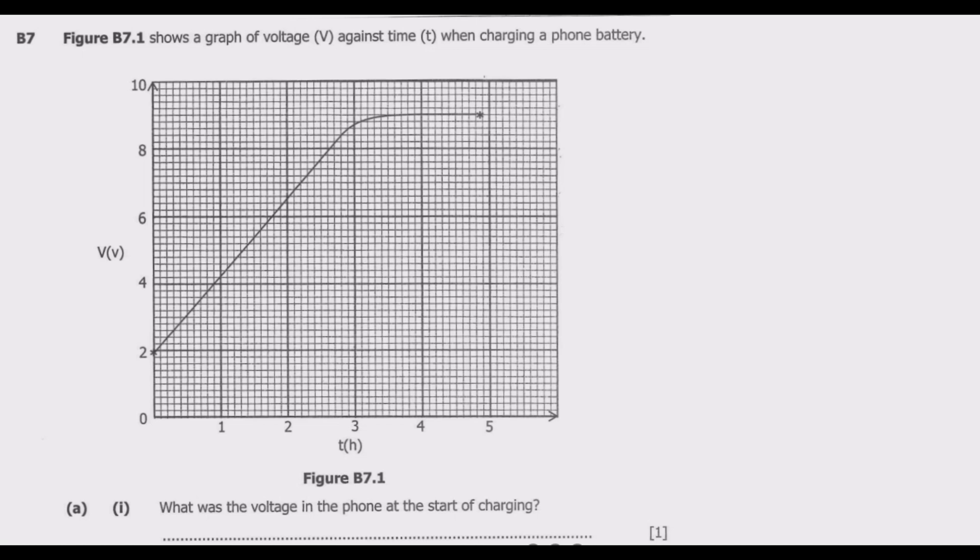Figure B7.1 shows a graph of voltage V against time when charging a phone battery. We have the graph here with time in hours and voltage in volts.